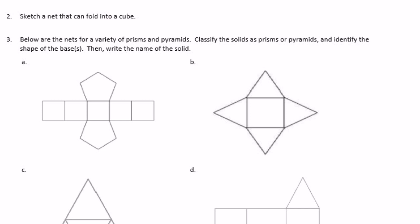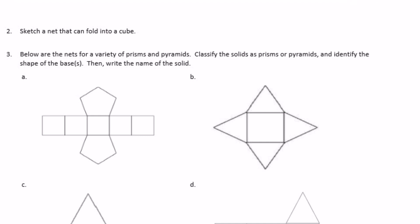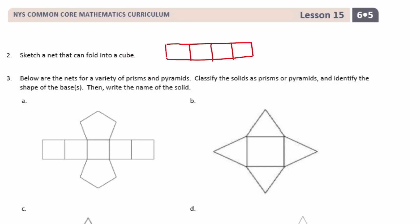Number two: sketch a net that could fold into a cube. A cube has six faces, so we need six squares. My favorite type of net to make is one that looks like a T — these four sides would fold up and go all the way around, and then these two sides on the end would flap up to close in the cube. There are maybe around 10 different nets you can draw that would all fold up into a cube, so if you think of a different one, go for it.